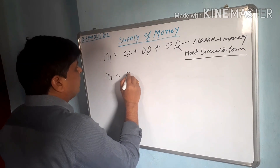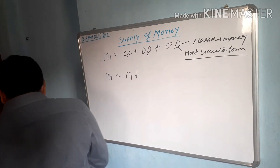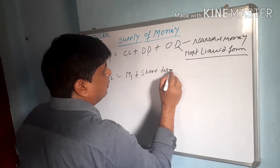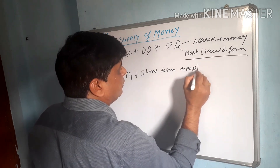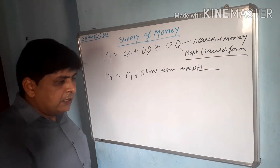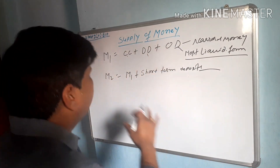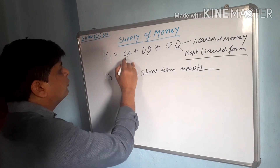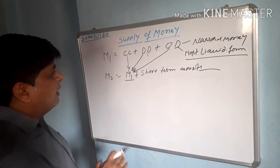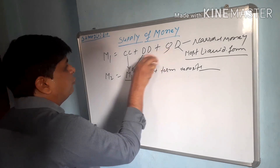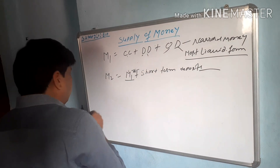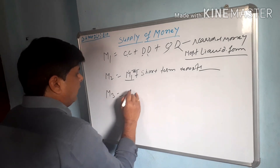M2 में M1 के सारे composition को लेते हैं और इसमें short term deposits जोड़ते हैं। Short term deposit means 1 to 90 days deposit। तो M2 = M1 + short term deposits (1 to 90 days)।